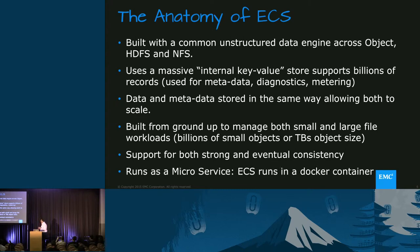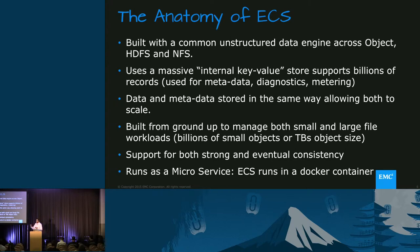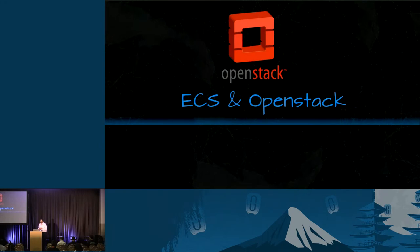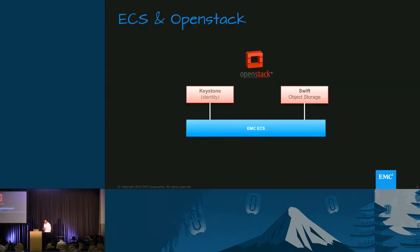ECS is built to run as a microservice — the whole ECS runs in a Docker container. It's very unique so that we can take a modular approach in the future and run it even in OpenStack as we move forward. When you talk about ECS and OpenStack, the key thing is how can we integrate it with Keystone, and having it as a Swift object storage.